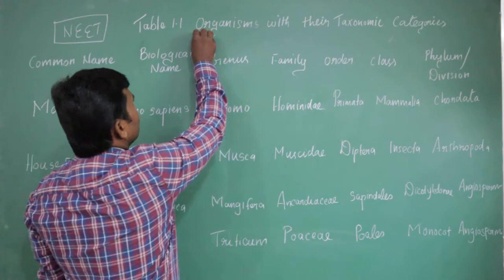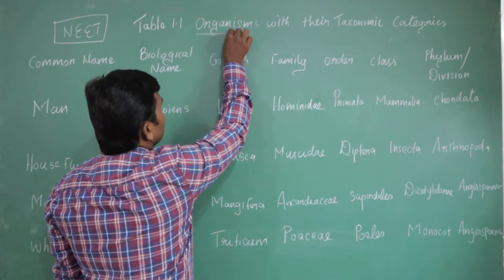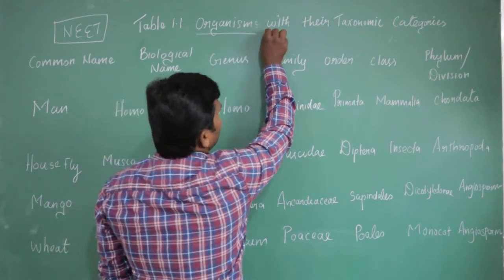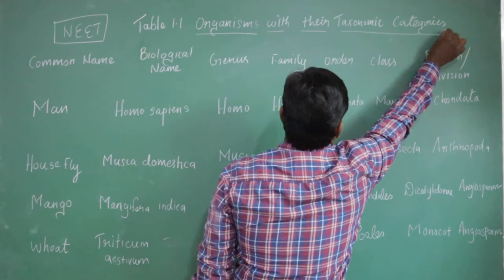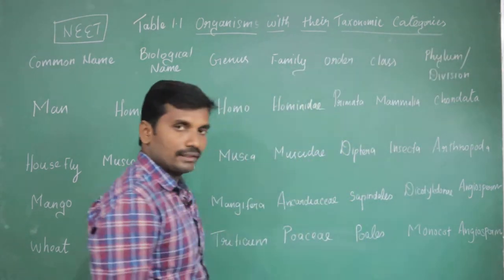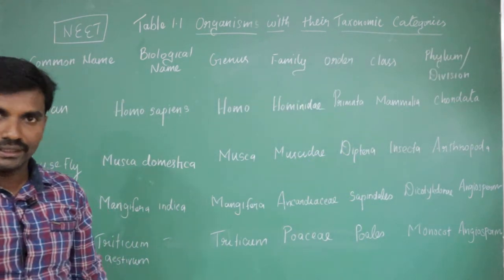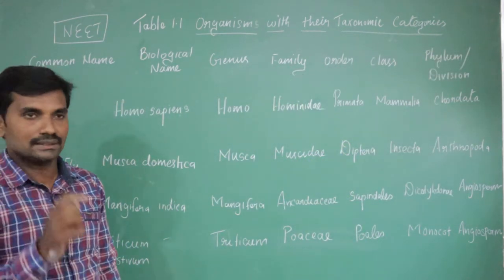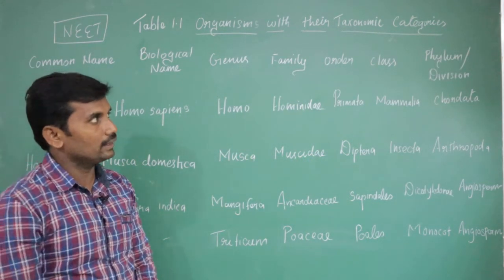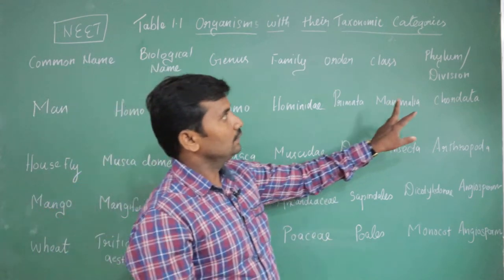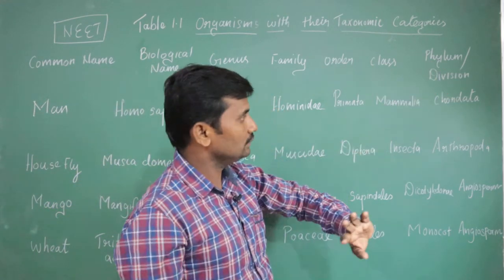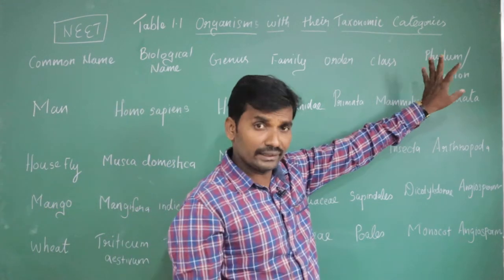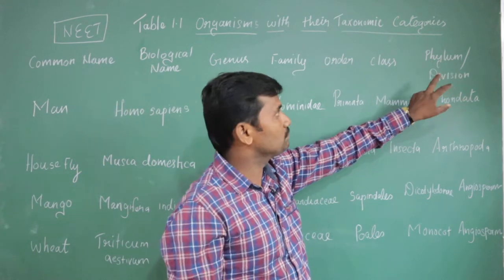What is given in Table 1.1? Some organism is given with their taxonomical category. The taxonomical category is not given. The first one — kingdom is not given. We can write in the kingdom.